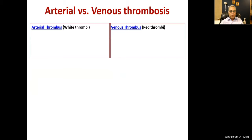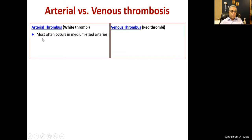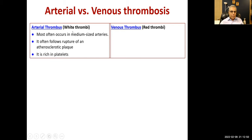We have two types of thrombi: arterial thrombus, known as white thrombi, and venous thrombus, known as red thrombi. White thrombi occur in medium-sized arteries, often follow rupture of an atherosclerotic plaque, and are rich in platelets, which is why they appear paler.